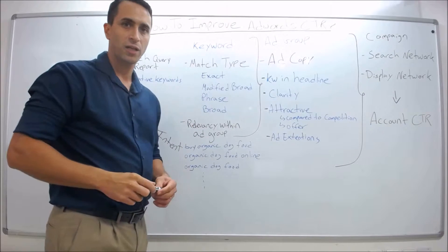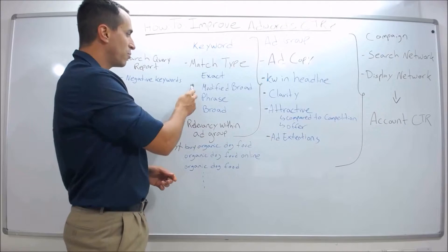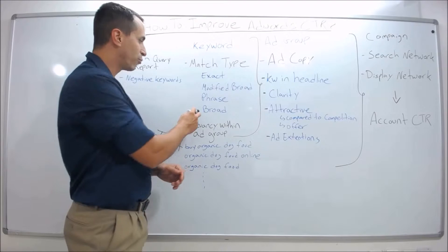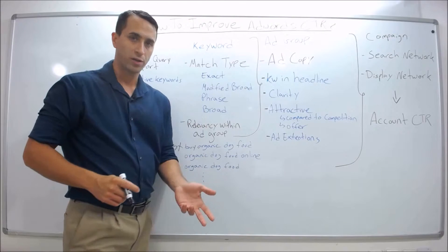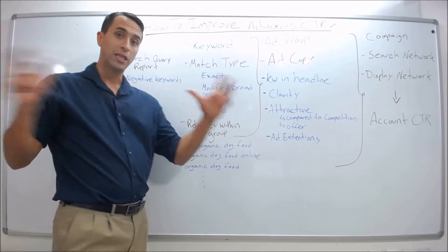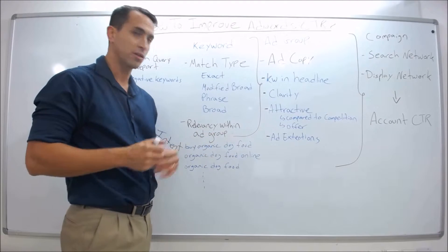With exact match, you're most likely to get the highest click-through rate. Modified broad and phrase get the next highest, and broad gets the lowest click-through rate. The reason you get lower click-through rate with broad is because Google broadly matches you to different keywords and search queries.